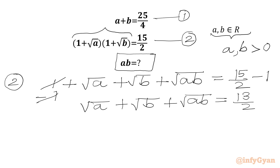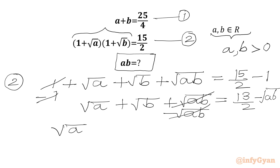Now we subtract √(ab) from both sides. The plus √(ab) and minus √(ab) cancel on the left-hand side, so we get √a plus √b equal to 13 over 2 minus √(ab).